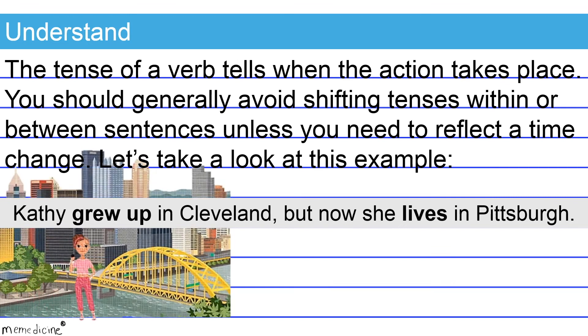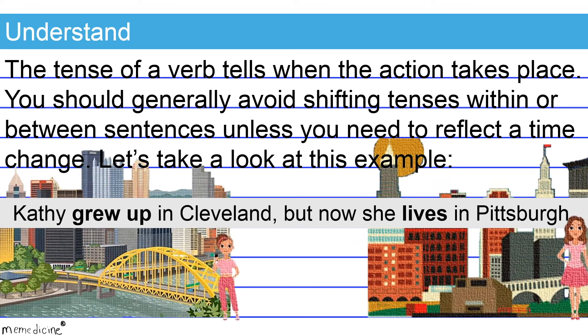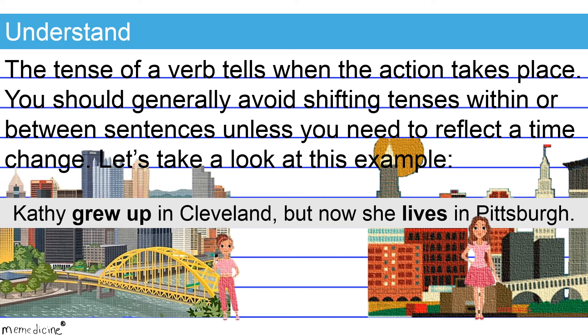Kathy grew up in Cleveland, but now she lives in Pittsburgh. The sentence shifts to the present tense to reflect a time change. This is appropriate in this instance. We shift from Kathy's younger years as indicated by the verb phrase 'grew up,' and then to her present adult self with the verb 'lives.' This shift in tense is appropriate.